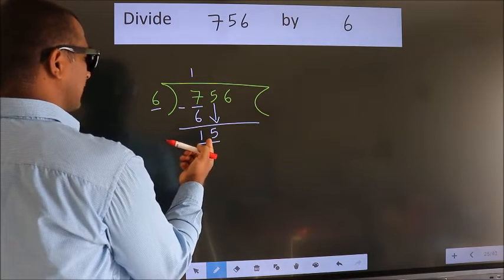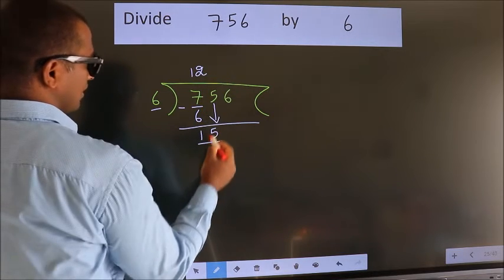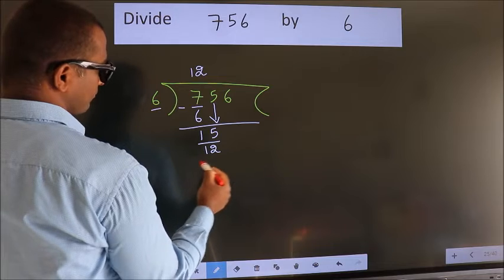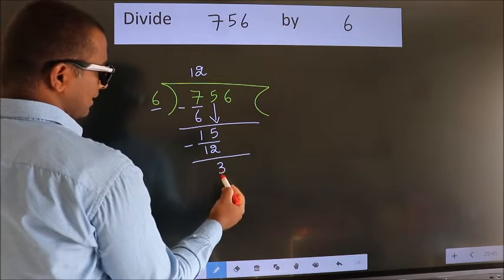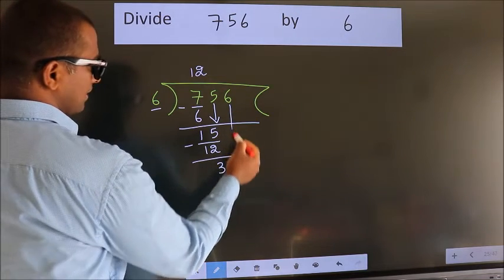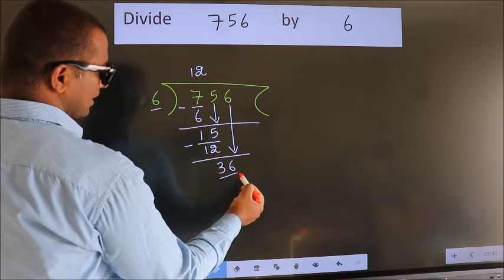A number close to 15 in the 6 table is 6 twos, 12. Now we subtract, we get 3. After this, bring down the beside number, so 6 down, so 36.